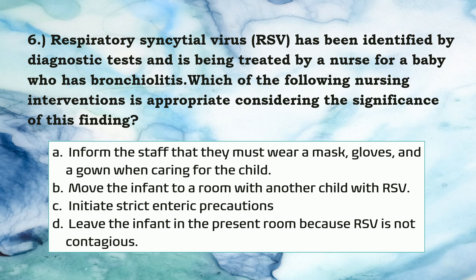Question number 6. Respiratory syncytial virus (RSV) has been identified and is being treated in a baby who has bronchiolitis. RSV is a highly communicable disorder that is not transmitted via the airborne route — the virus is usually transferred by the hands. Use of contact and standard precautions is necessary, including good hand-washing, gloves, and gowns. Masks are not required. An infant with RSV is isolated in a single room or placed in a room with another child with RSV. Enteric precautions are unnecessary. Therefore, the correct answer is B: move the infant to a room with another child with RSV.